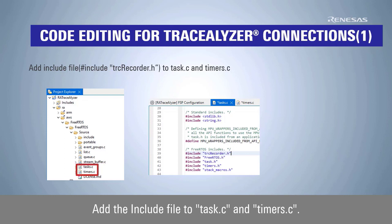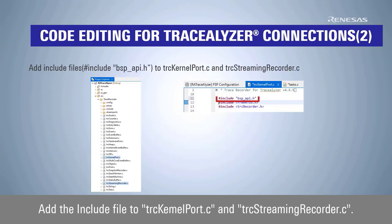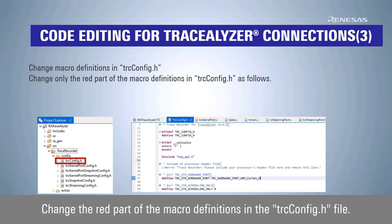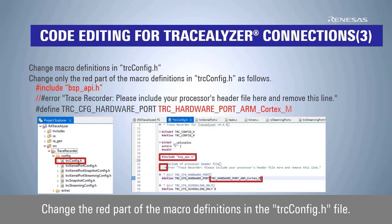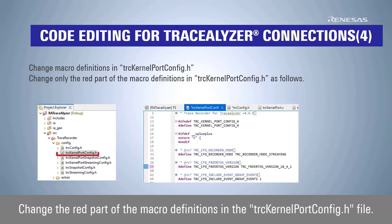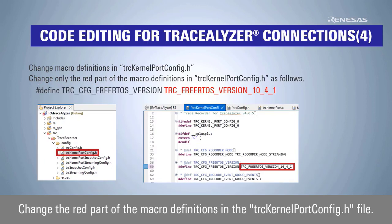Add the include file to task.c and timers.c. Add the include file to trcKernelPort.c and trcStreamingRecorder.c. Change the red part of the macro definitions in the trcConfig.h file. Change the red part of the macro definitions in the trcKernelPortConfig.h file.